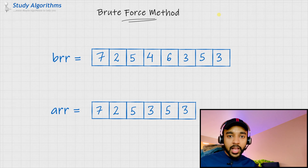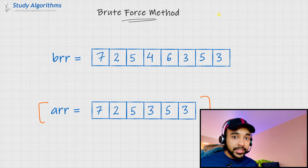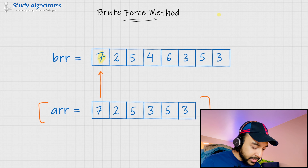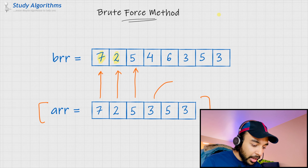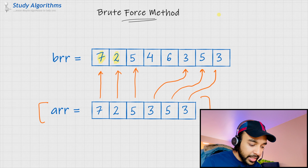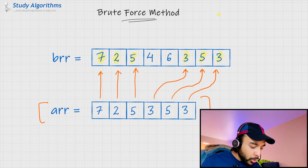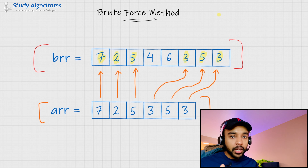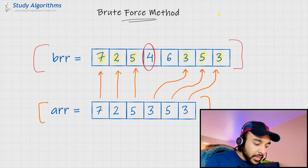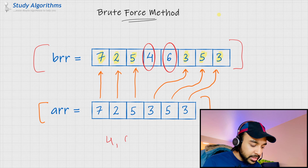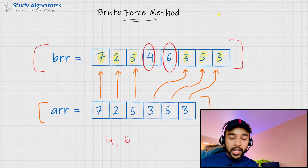One way to solve this problem would be: I can look up the elements in my array arr. Since this is the array the artist copied, I can verify which elements got copied. I start with 7, and I can see that I could find the element 7, so I mark it. Next, I start with 2, find the element 2, and mark it again. Then I find elements 5, 3, 5, and 3, and I mark all of these elements. Once you have completed the traversal of the second array, you can do a quick scan of the first array and check which numbers have not been marked. In this case, you can see that 4 and 6 have not been marked, and hence these are the missing numbers. As an additional step, you can find these numbers and sort them to get your answer. And this method would work perfectly.